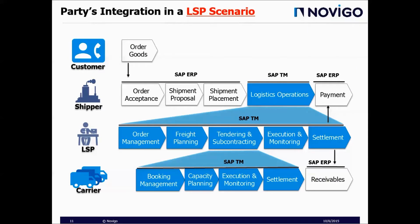Now I would like to show you how all parties in one transportation cycle integrate with each other. We have two major transportation scenarios in SAP TM: LSP scenarios and shipper scenarios. This slide covers LSP scenarios, meaning we have a third-party logistics service provider to manage and organize our shipments. Everything starts with a customer placing an order. Then the shipper does order acceptance, shipment proposal, and shipment placement through their SAP ERP system.